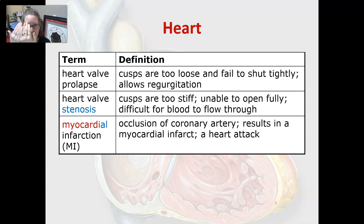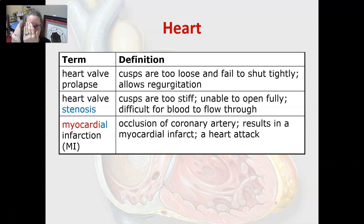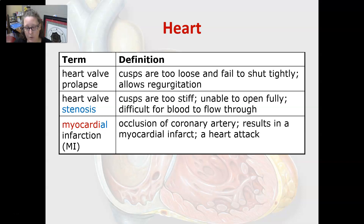In heart valve prolapse, blood can backflow from the ventricle to the atria instead of going from the ventricle to the arteries. Heart valve stenosis is when the cusps of the valve are too stiff, so they cannot fully open, making it difficult for blood to flow through and completely empty the atria into the ventricle.